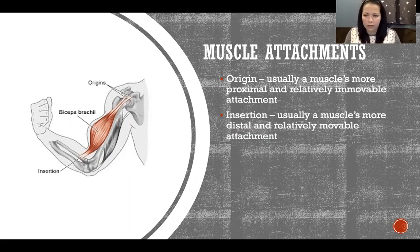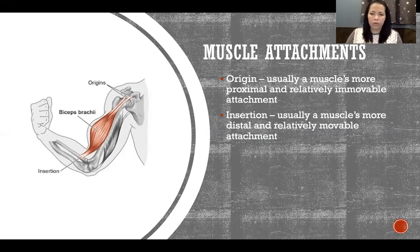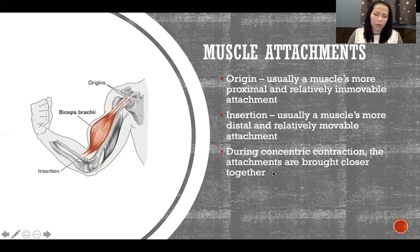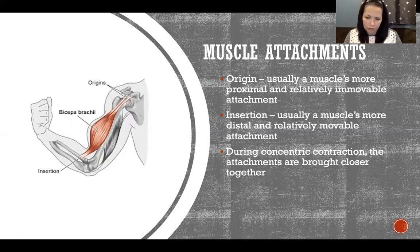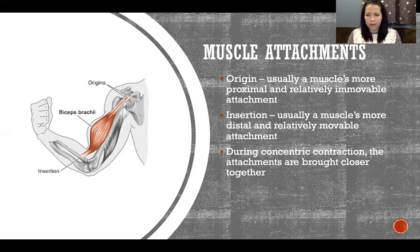Levator scapula is an example where the origin and insertion are opposite to convention. In that case, it's just a matter of knowing which one is your origin and which is your insertion. During a concentric contraction, the attachments are brought closer together — usually the insertion, the more distal movable attachment, moves closer to the origin.